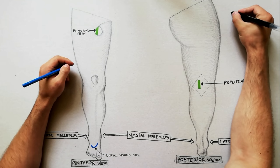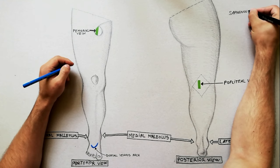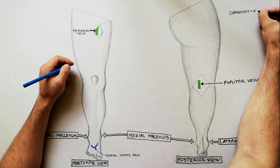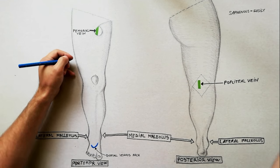The great saphenous vein lies in the superficial fascia and is easily seen. Actually, the word saphenous comes from Greek and means easily seen.